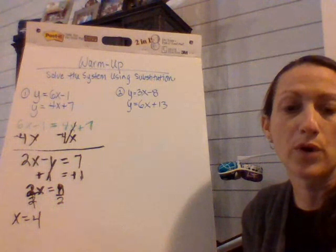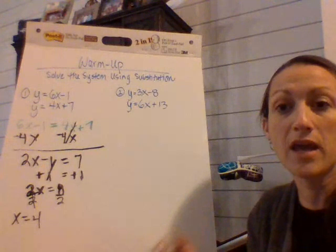Now we are in a system, so our answer is a solution, which means we have to have an x and a y. We have to write our solution as a point. So we know that the x coordinate is four.